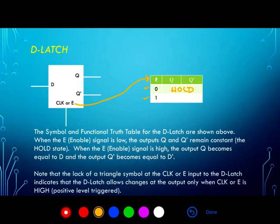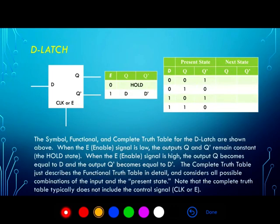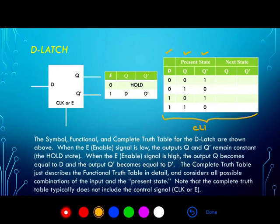So the output Q will become D and the output Q0 will become D0. In the complete truth table, which considers all possible combinations of the input and all combinations of the present state, we look at the corresponding next state. This complete truth table applies when the clock is high — when the control signal is active. When the clock is high, the present state is transformed into whatever the input D is, so Q just becomes D.